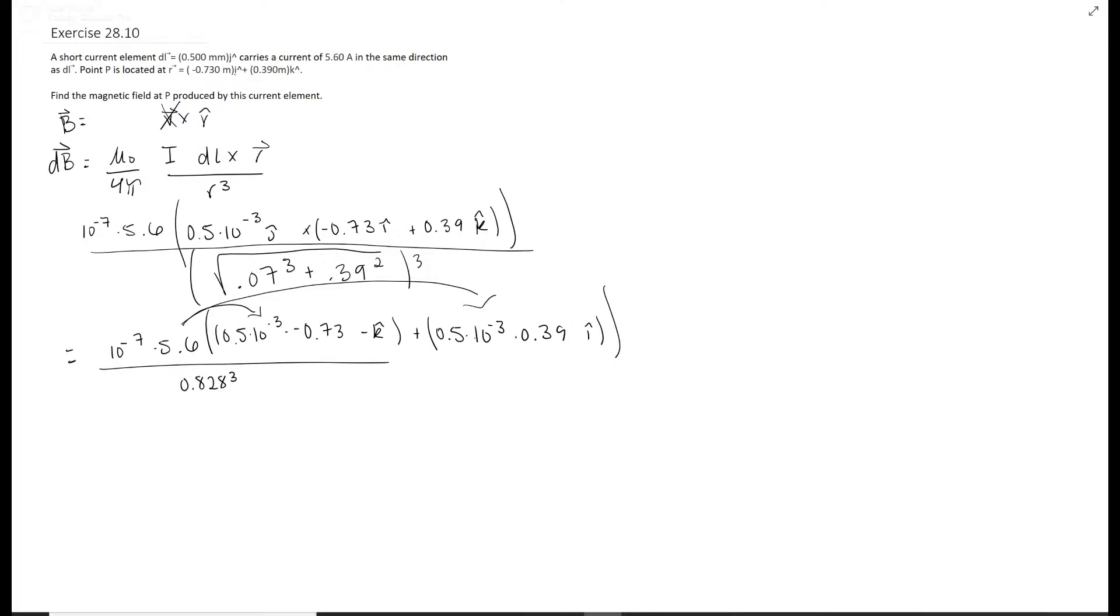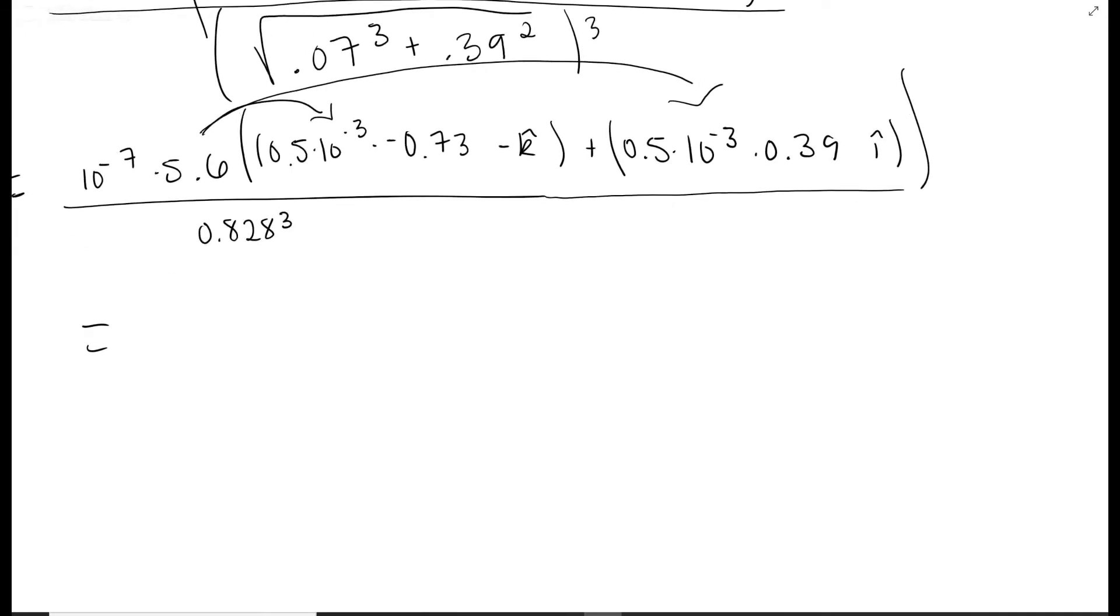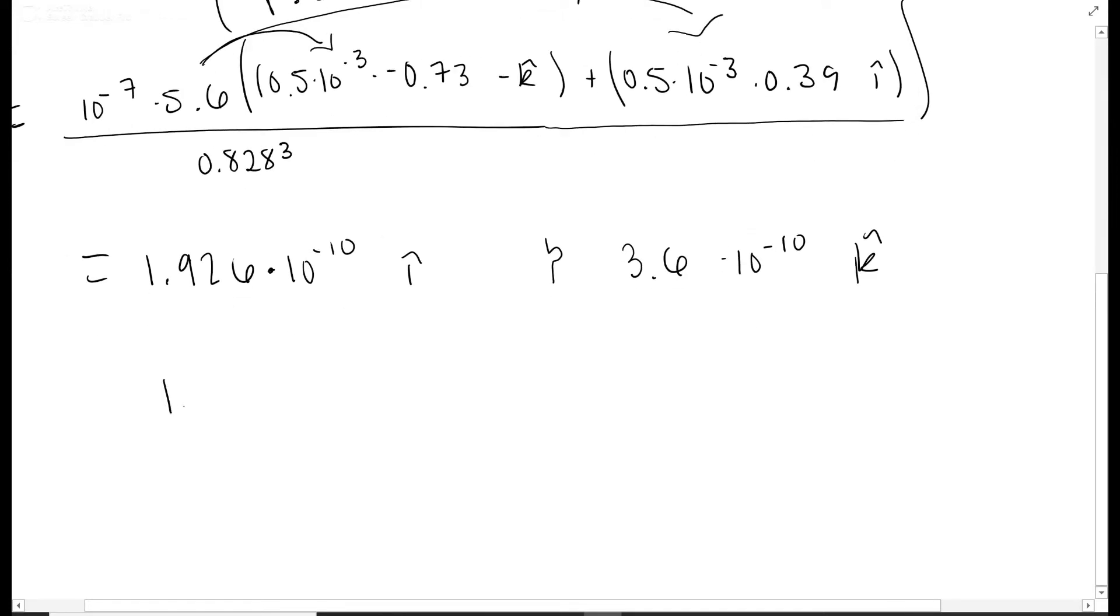You end up getting 1.926 times 10 to the negative 10 in the i direction - that came from the second part - and 3.6 times 10 to the negative 10 in the k direction. They want this in a specific format, so it would be 1.92, comma zero for the j direction because there's nothing there, comma 3.6. That would be your answer in teslas because this is magnetic field.